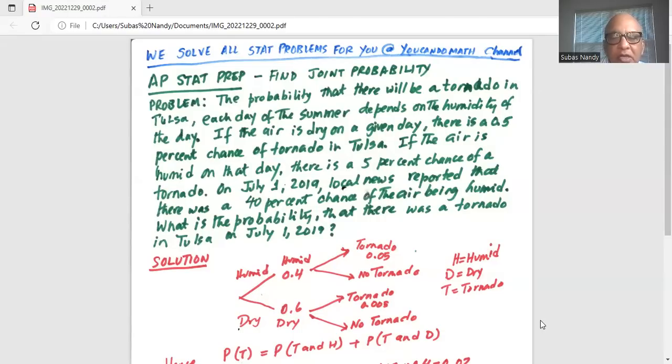Now, if the air is humid, then the chance of tornado is 5% or 0.05. So from humid, there is a further branching of tornado probability of 0.05 and no tornado probability of 0.95 on a humid day.